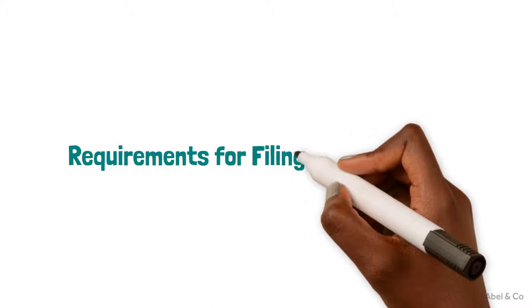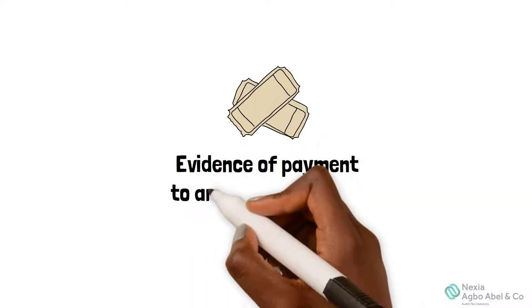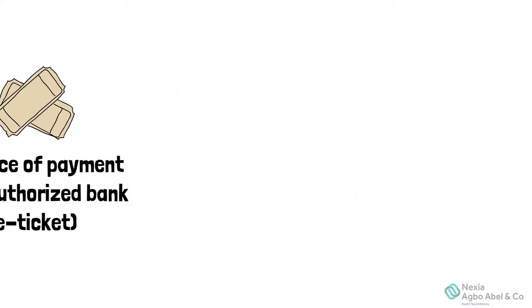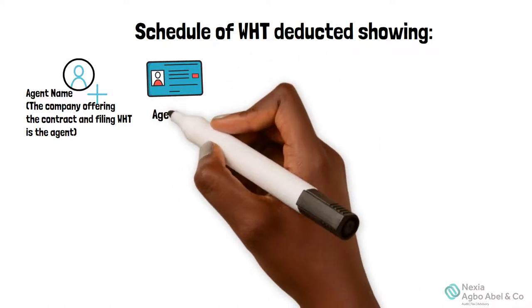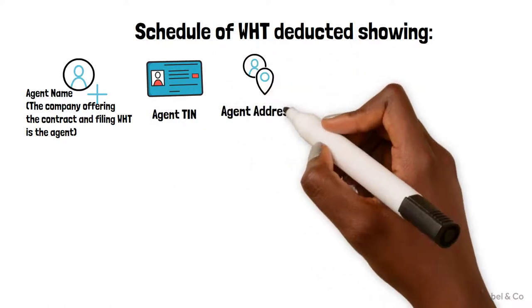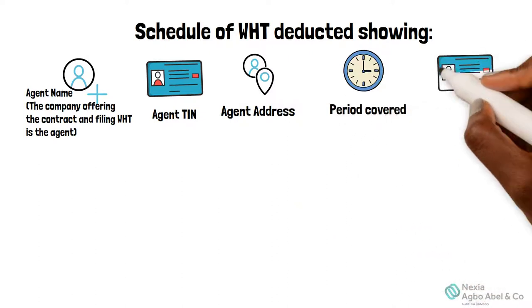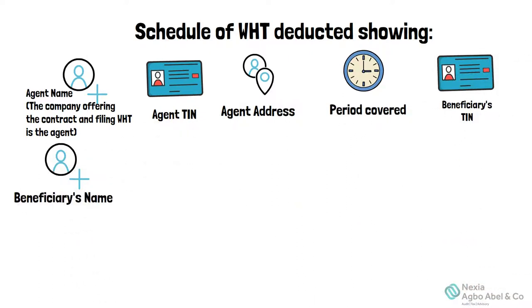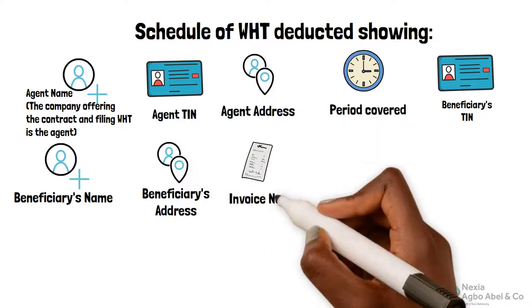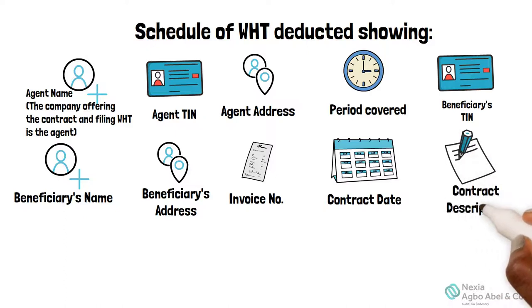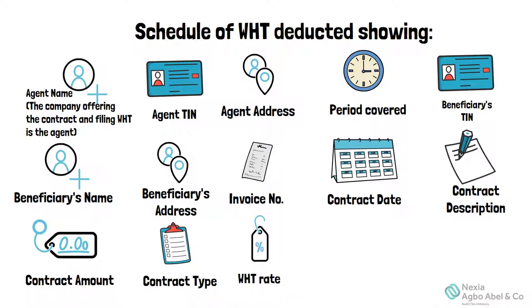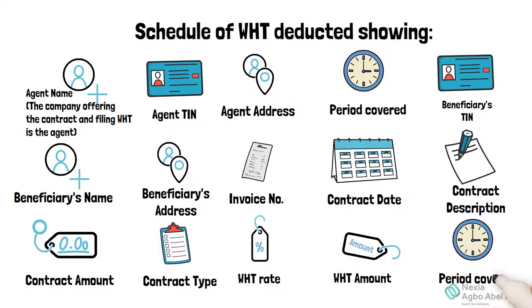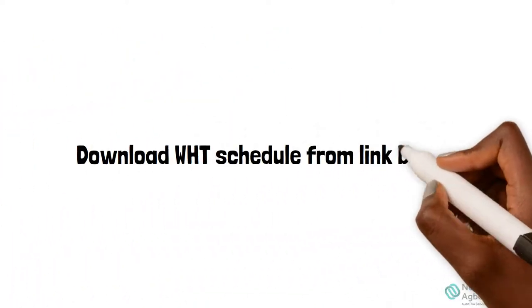Requirements for Filing Withholding Tax. To file Withholding Tax, you need the following documents: Evidence of Payment to an Authorized Bank, also called an e-ticket; and a Schedule of Withholding Tax deducted showing the Agent Name, Agent Tax Identification Number, Agent Address, Period Covered, Beneficiary Tax Identification Number, Beneficiary's Name, Beneficiary's Address, Invoice Number, Contract Date, Contract Description, Contract Amount, Contract Type, Withholding Tax Rate, Withholding Tax Amount, and Period Covered. Follow the link in the description to download a copy of the WHT Schedule from our website.